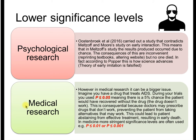Lower significance levels. This is a study that has come out recently, literally this year, that has completely overturned Meltzoff and Moore's study on early interaction. This means that the results that were produced occurred due to chance in Meltzoff and Moore's study, likely. There's two possibilities. It's either due to chance or it's due to some sort of nefarious activity on the part of the experimenters, such as deliberate fraud or poor research design or sometimes investigator effects.